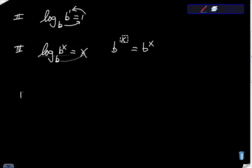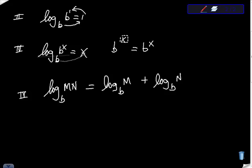This is the last rule I'm going to go over right now. It's rule number four. Rule number four says this: log base B of M times N is equal to log base B of M plus log base B of N.